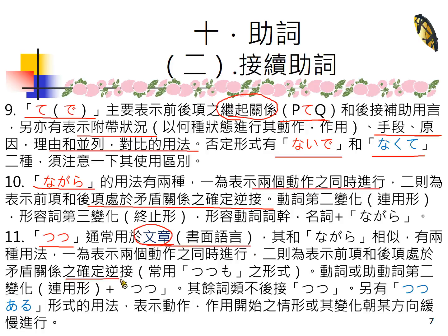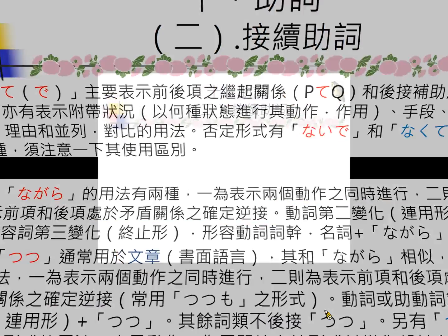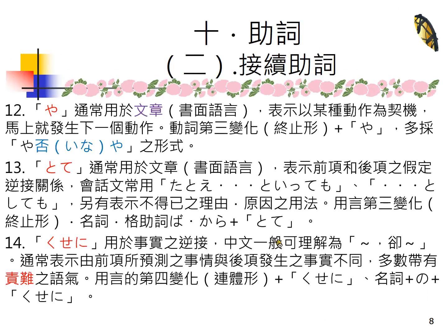て还有表示附带状况、手段、原因理由、并列对比等等的用法。为什么要分成这么细呢？因为它的否定型有两个：一个是ないで，一个是なくて，因为前面肯定型的用法不一样，对照过来的否定型用法就不一样。ながら表同时进行，通常是两个动作的同时进行，一面怎么样一面怎么样。つつ跟ながら一样有两个用法，第二个用法是前后处于矛盾关系的确定逆接用法，つつ一般用在书面语言。や也用于书面语言，通常是「やいなや」的形式，表示以某种动作为契机马上就发生下一个动作。とて常用于文章或书面语言，表示前项后项的假定逆接关系，讲话的时候通常用たとえ。